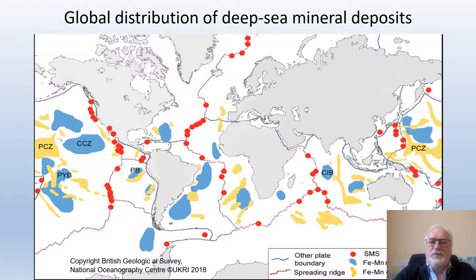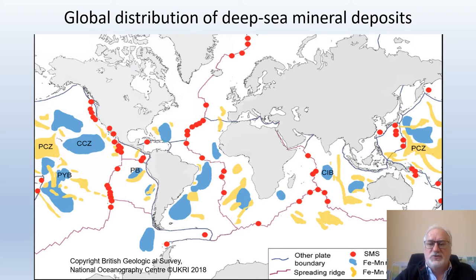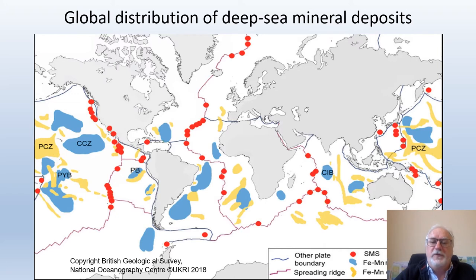This map demonstrates the global character of deep sea mineral distribution. What does 'global' mean? It means you can find mineral deposits in any ocean without exception. Of course, there are places where they are concentrated or not concentrated, and we know the reason for this. But anyway, based on our knowledge and experience, we may predict the occurrence of seabed minerals everywhere.